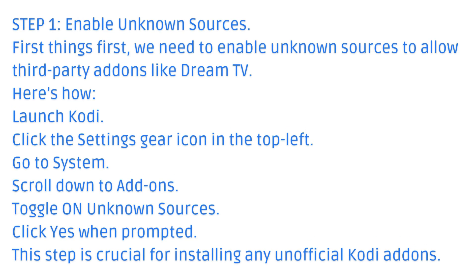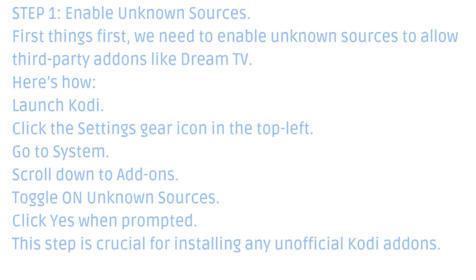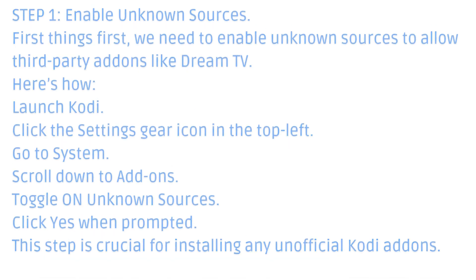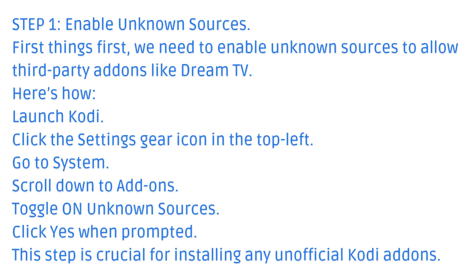Step 1: Enable Unknown Sources. First things first, we need to enable unknown sources to allow third-party add-ons like DreamTV. Here's how: Launch Kodi, click the Settings gear icon in the top left, go to System, scroll down to Add-ons, toggle on Unknown Sources, and click Yes when prompted. This step is crucial for installing any unofficial Kodi add-ons.